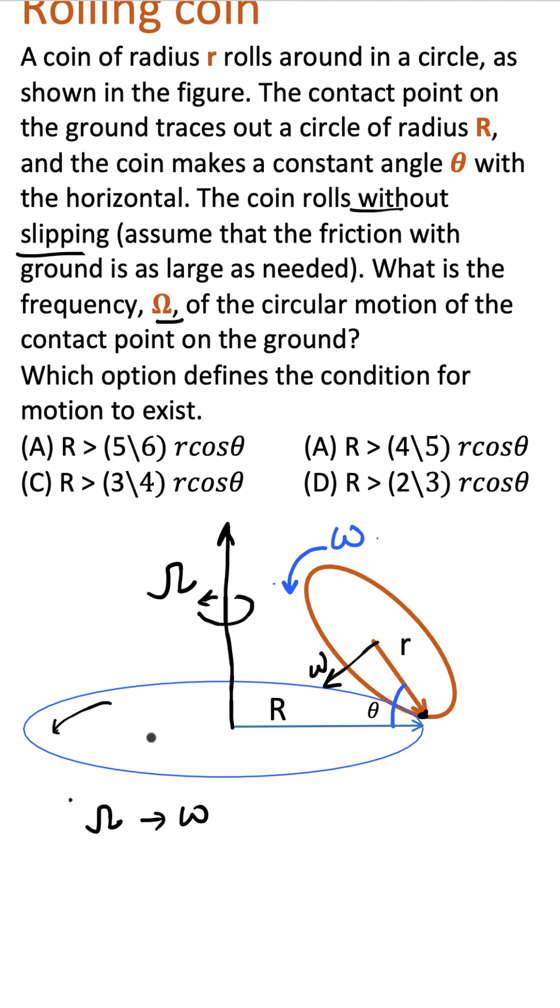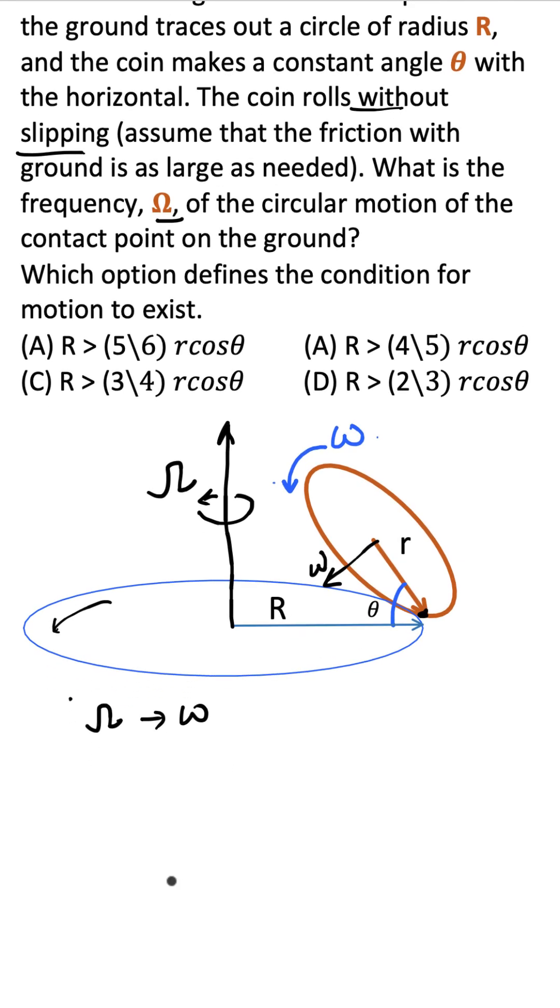So without slipping, you'll find some relation. Then you should see that there is a torque acting on this disc. If this is the disc, there is a torque acting on it because at this point P where it touches the ground.